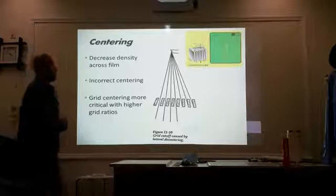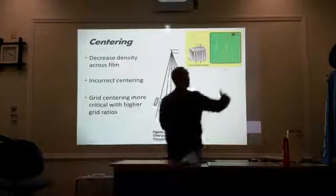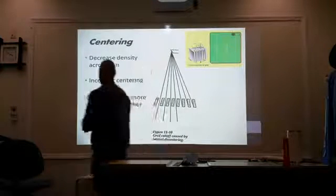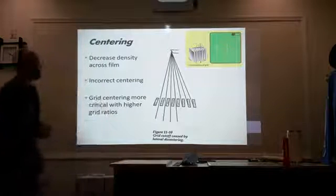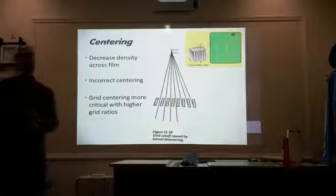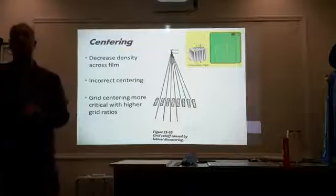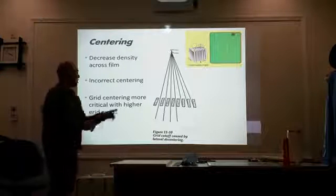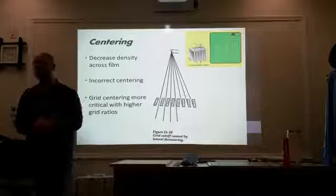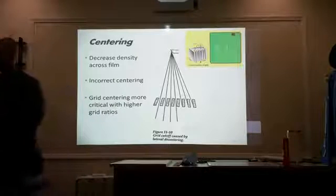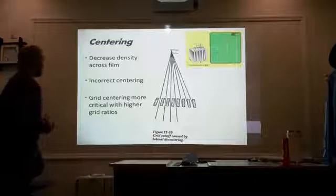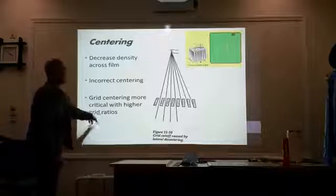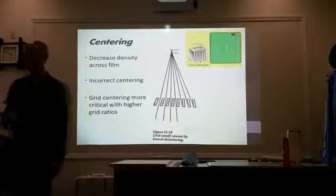Centering. Again, you want to be right in the center of your grid. If you're off-center, you're going to have decreased density across the film because your beam is divergent and it's not matching the lead strips. Centering is more critical with higher grid ratios. Narrow margin of error.